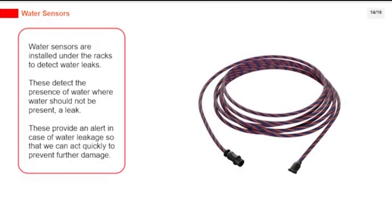Water sensors are installed under the racks to detect water leaks. These detect the presence of water where water should not be present — a leak. They provide an alert in case of water leakage so that we can act quickly to prevent further damage.